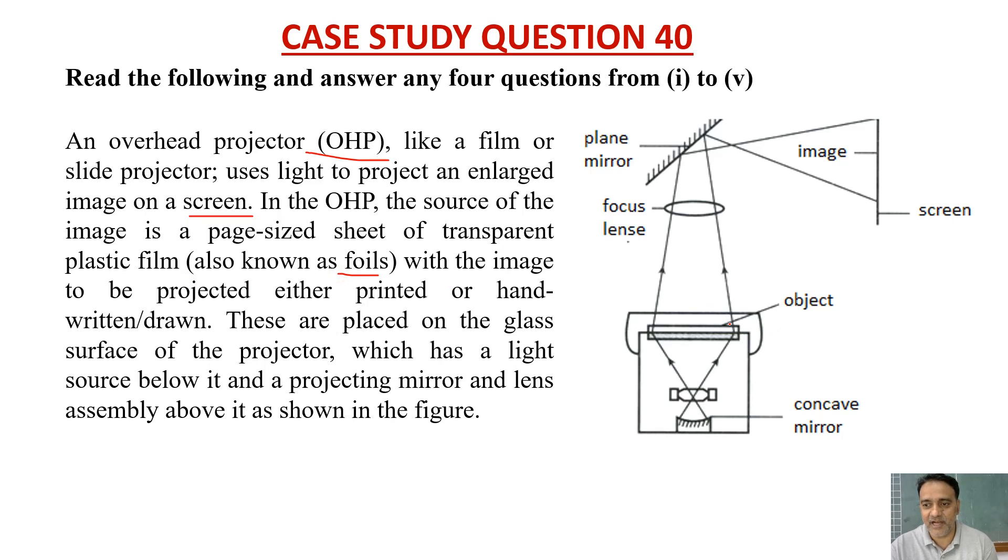We are going to object here with the image to be projected, either printed or handwritten drawn. These are placed on the glass surface of the projector, which has a light source below it. Here is a light source and a projecting mirror and lens assembly above it as shown in this figure.